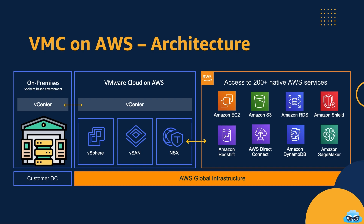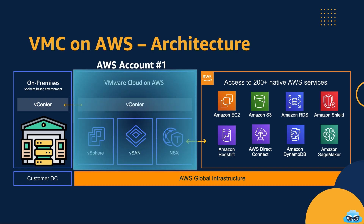The second component: AWS account number one. Here, VMware Cloud on AWS comes into play — a dedicated space where VMware's SDDC stack is installed, integrating your on-premises resources with the cloud scale and flexibility.